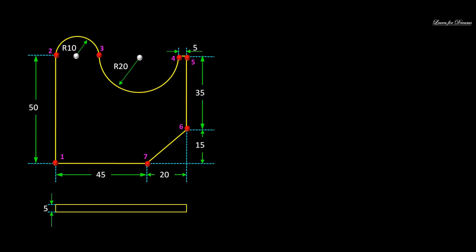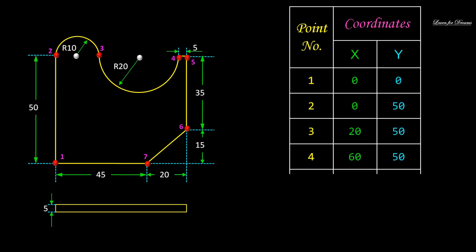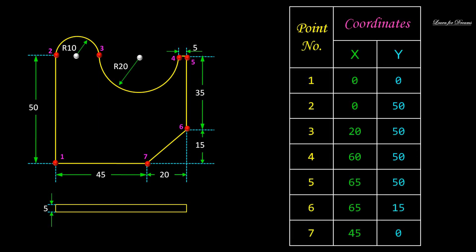This is the given layout which has circular parts. The very first step is finding XY coordinates for each point. Point 1 is the origin, point 2 is (0, 50), point 3 is (20, 50), point 4 is (60, 50), point 5 is (65, 50), point 6 is (65, 15), and point 7 is (45, 0).